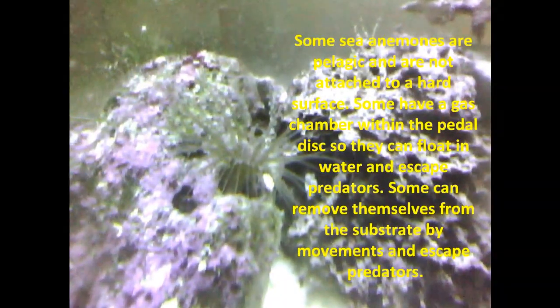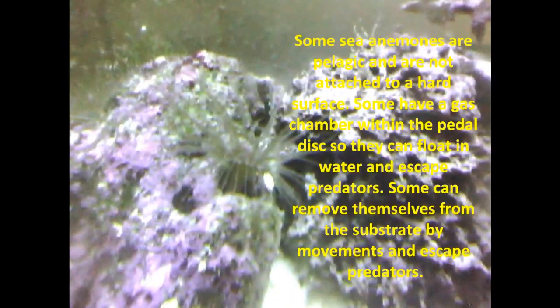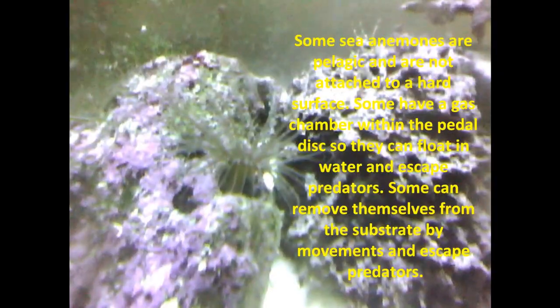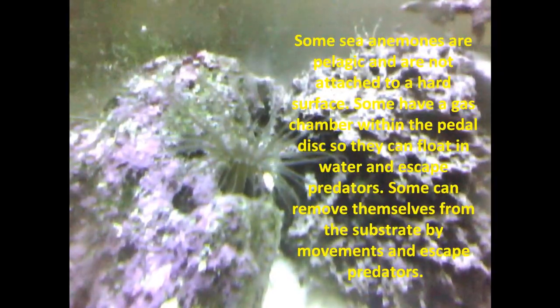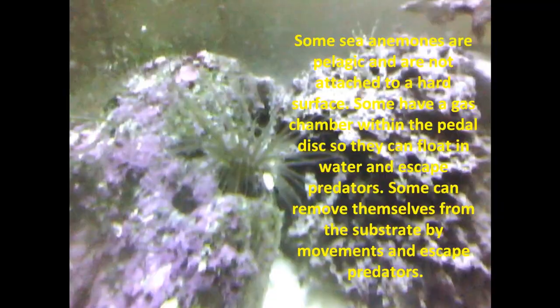Some sea anemones are pelagic and are not attached to a hard surface. Some have a gas chamber within the pedal disc so they can float in water and escape predators. Some can remove themselves from the substrate by movements and escape predators.